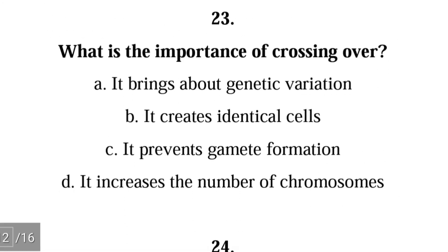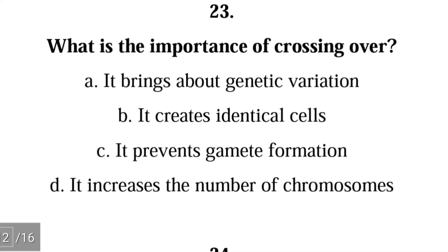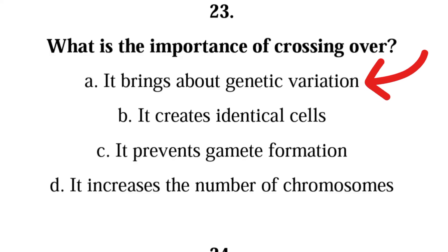Question 23: What is the importance of crossing over? A. it brings about genetic variation, B. it creates identical cells, C. it prevents gamete formation, D. it increases the number of chromosomes. The correct answer is A; crossing over leads to genetic recombination, which leads to genetic variation.